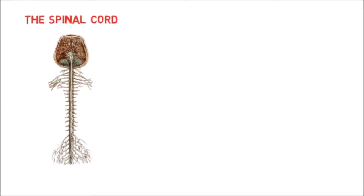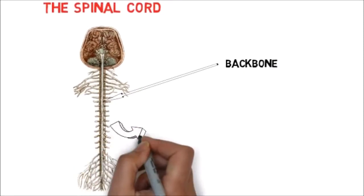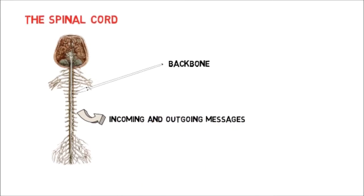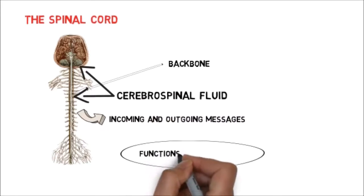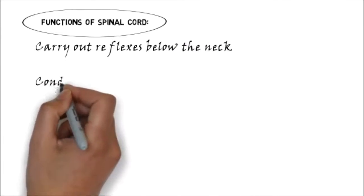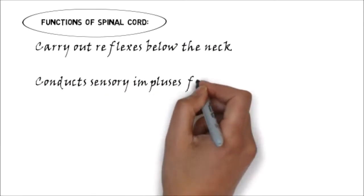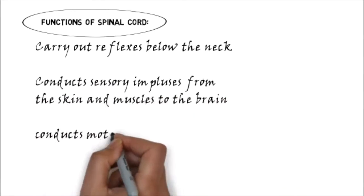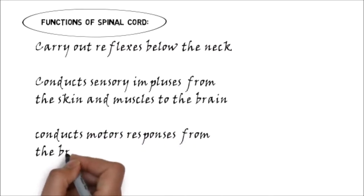The spinal cord extends from the medulla of the brain downward almost the full length of the backbone. The spinal cord consists of nerves that carry incoming and outgoing messages between the brain and the rest of the body. It is also wrapped in the same three meninges as the brain, and the space between them contains the same cerebrospinal fluid. Its functions are: carry out reflexes below the neck; conduct sensory impulses from the skin and muscles to the brain; conduct motor responses from the brain to the trunk and limbs.